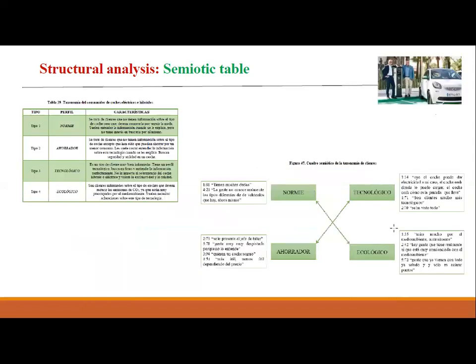Here is another example from a final degree project. They had seven or eight in-depth interviews and found four profiles of electric and hybrid car users: normies, savers, technological, and ecological — because they had different motivations. The normies with some supporting ideas, the savers who buy because it's cheaper in the medium or long term, and the technological and ecological profiles.